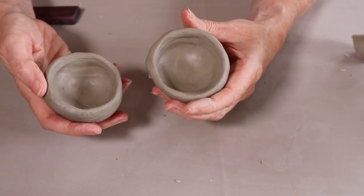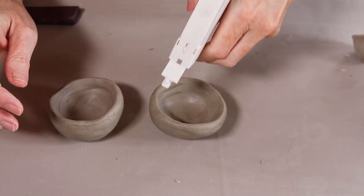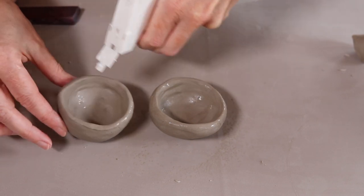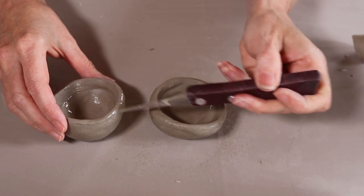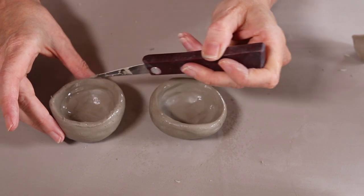What I usually do is just spray the top with a little bit of water first and then I'm just going to use my knife just to score the top. These two are going to go together.